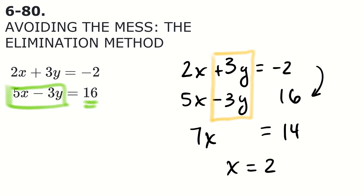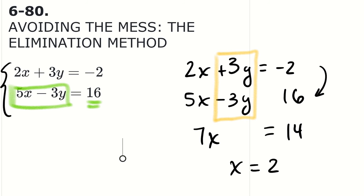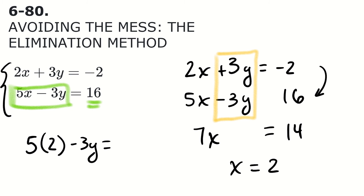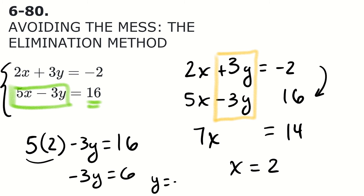Now that we know x equals 2, I pick either original equation — I'll use the second one — and write 5 times 2 minus 3y equals 16. That's 10 minus 3y equals 16, so negative 3y equals 6, and dividing by negative 3 gives y equals negative 2. The solution to this system is the same ordered pair: x equals 2, y equals negative 2.